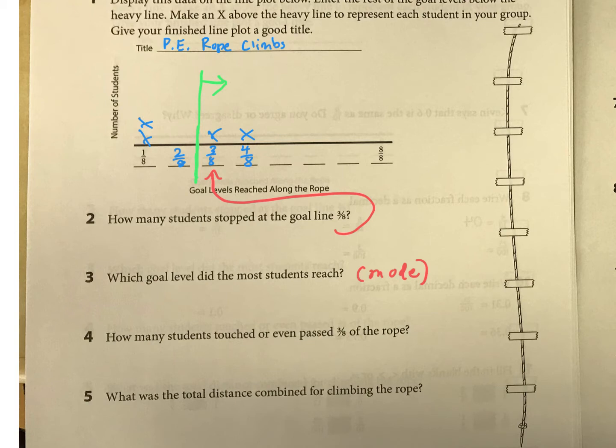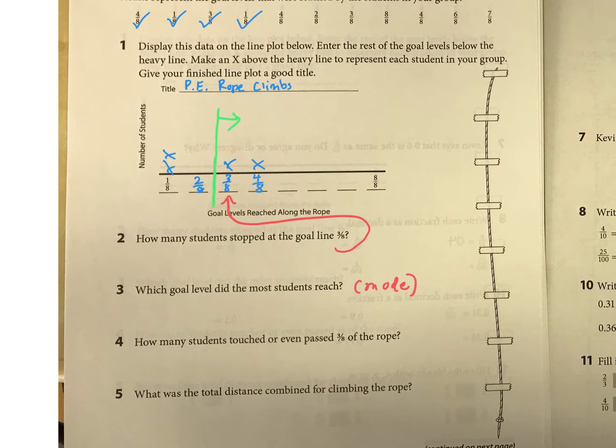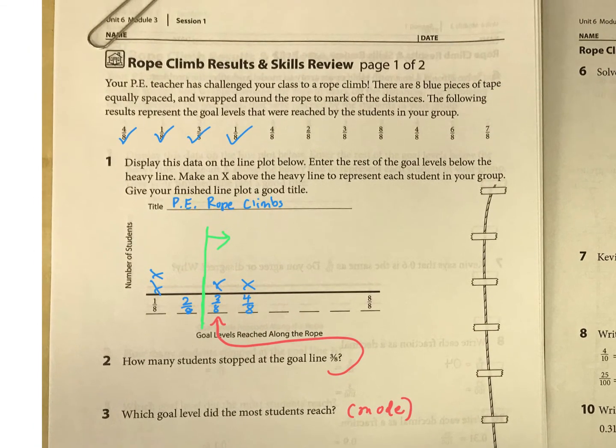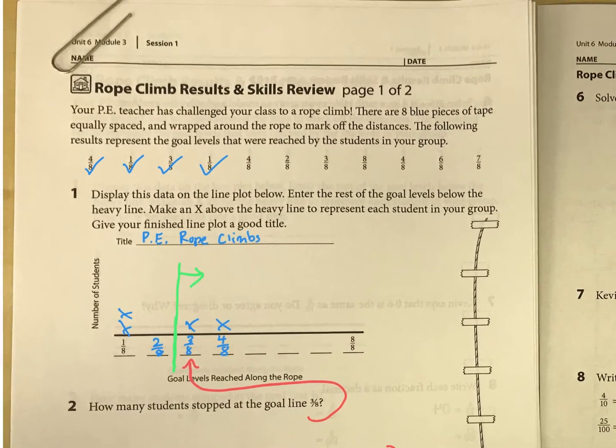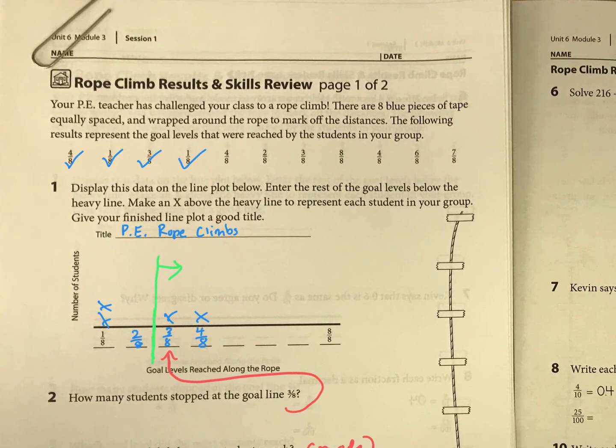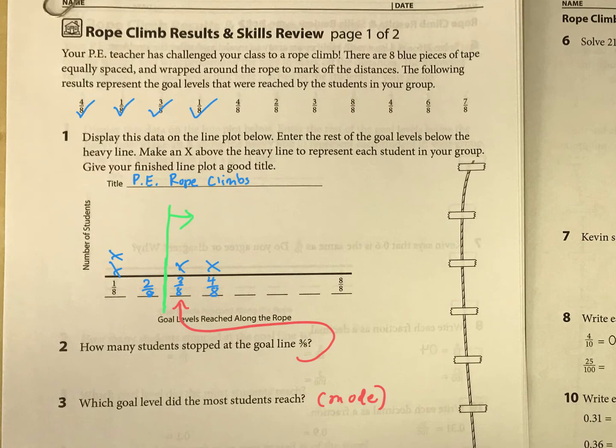And then what was the total distance combined for climbing the rope? Oh boy, that's a bit of a more challenging one. Okay, so total distance is we're basically adding all of this up. Now the nice thing is everything is an eighth, so they're easy to add together. So we're basically adding all of the numerators, which are the top numbers.